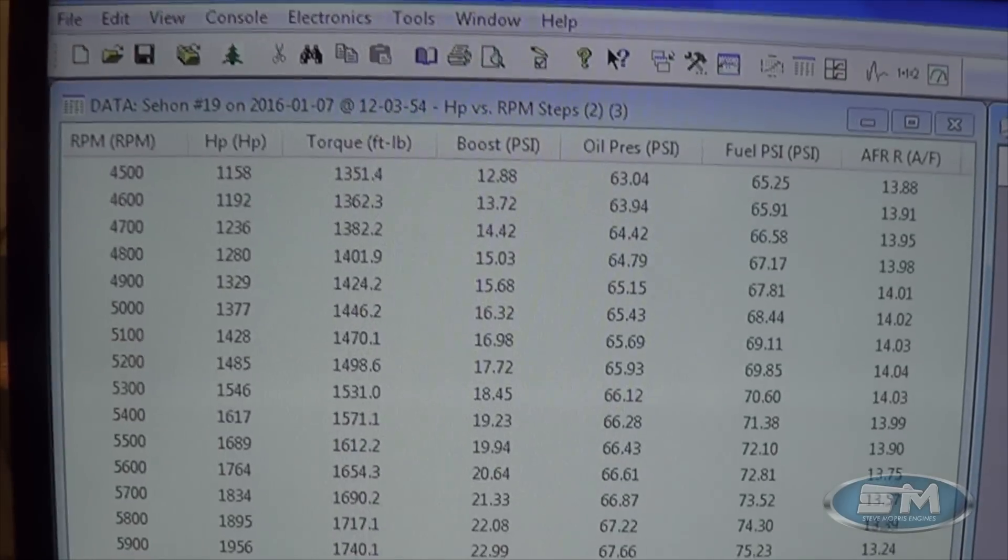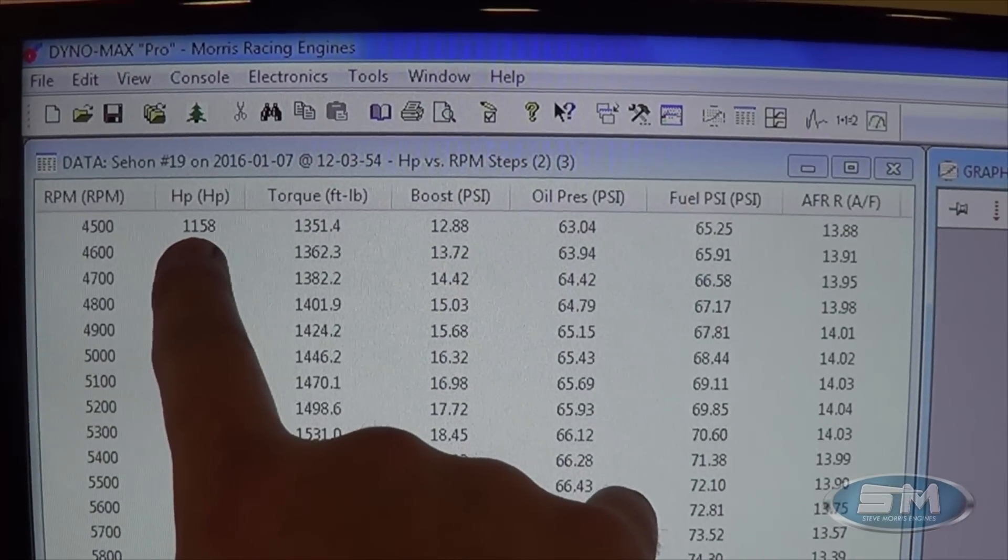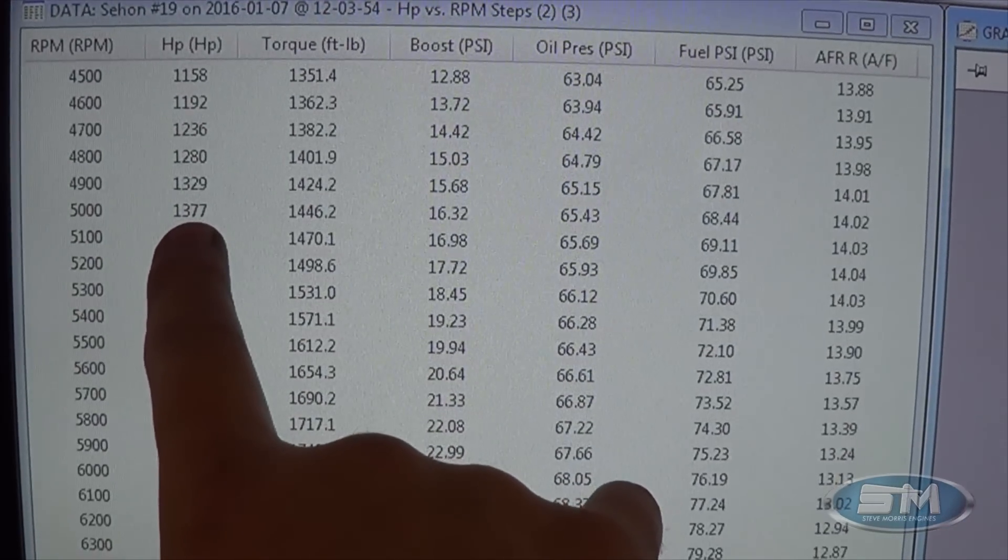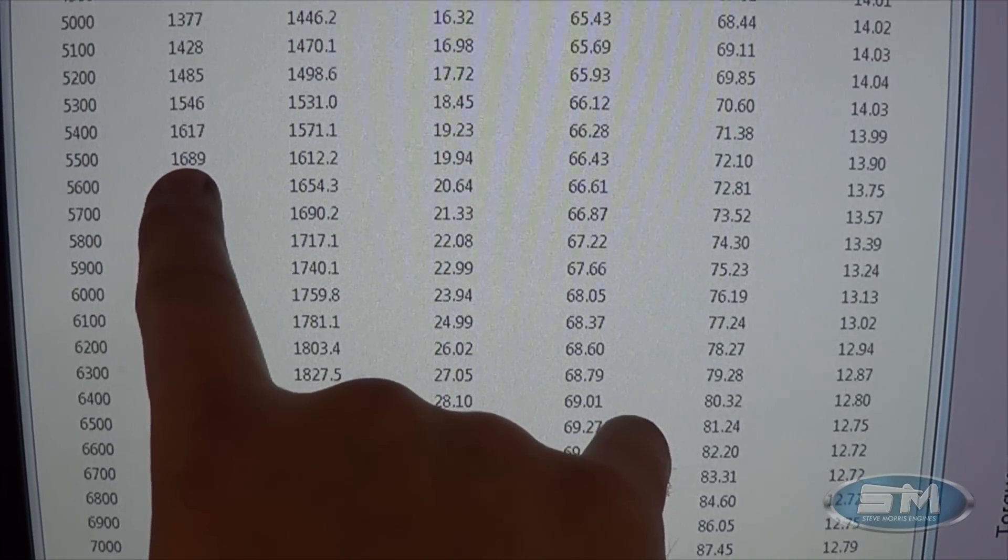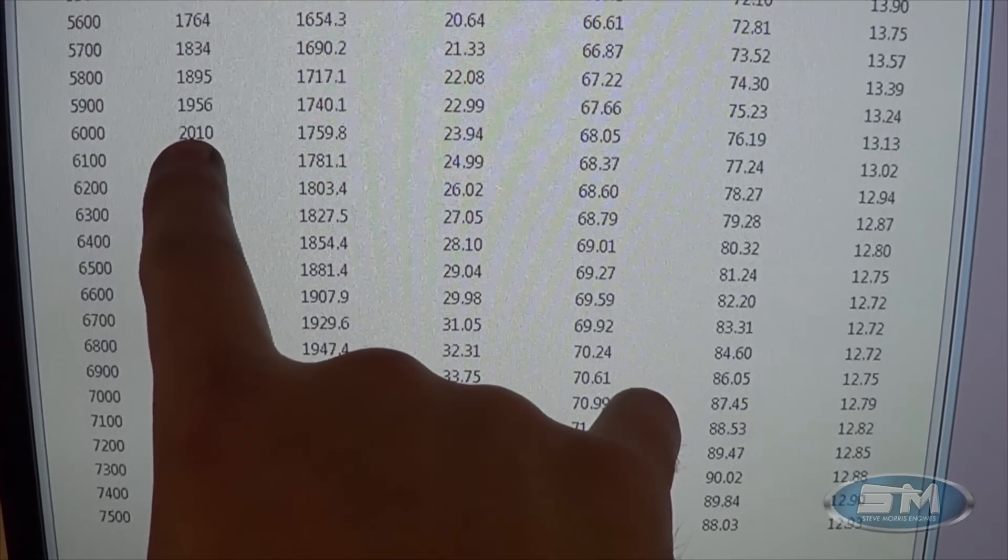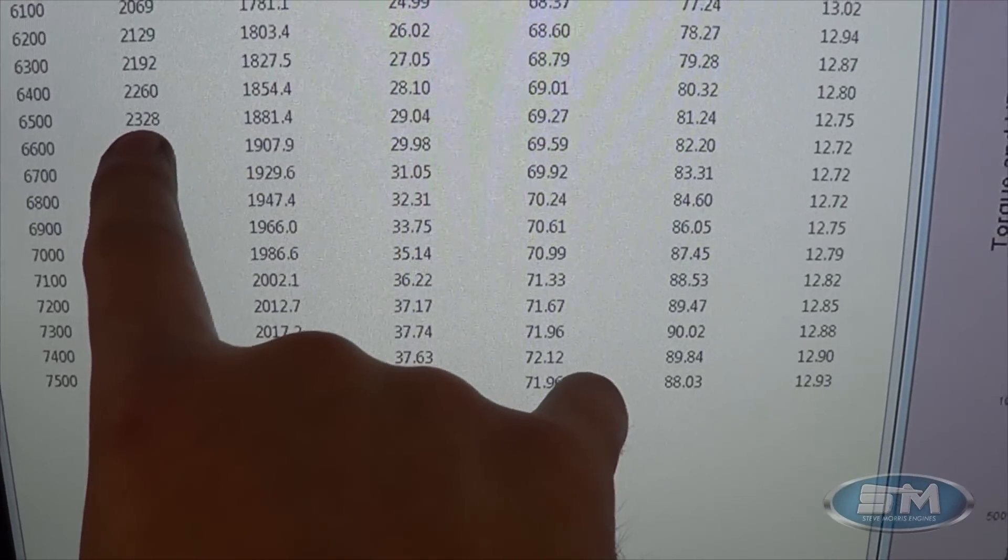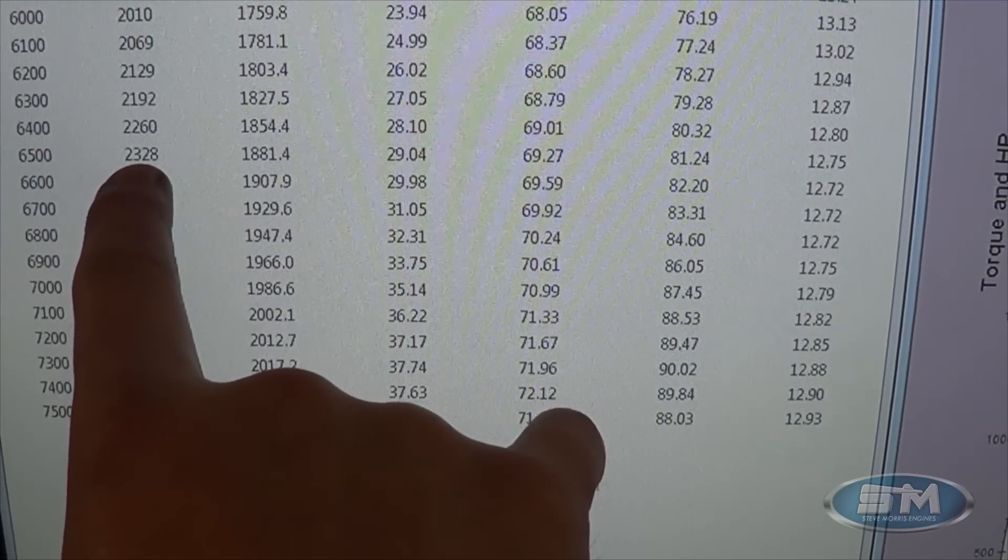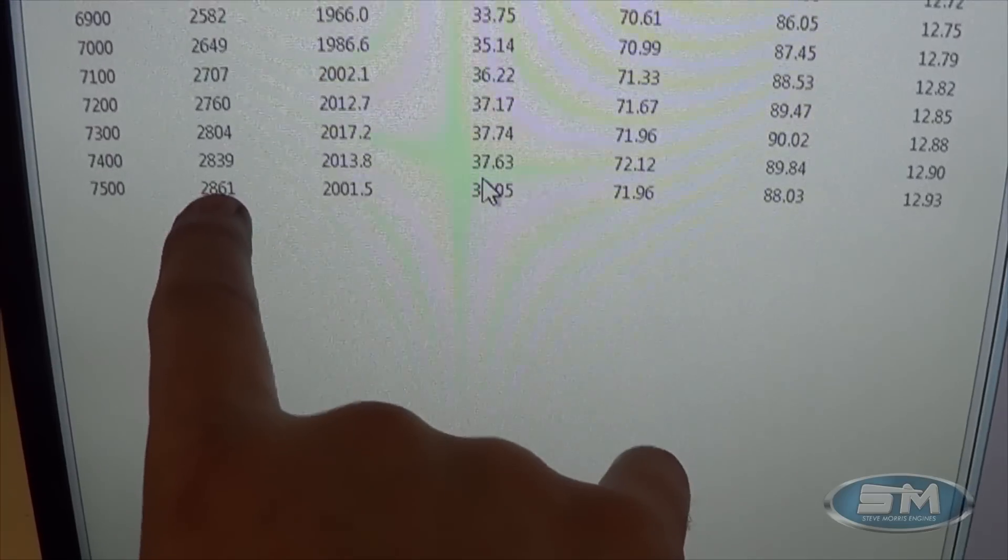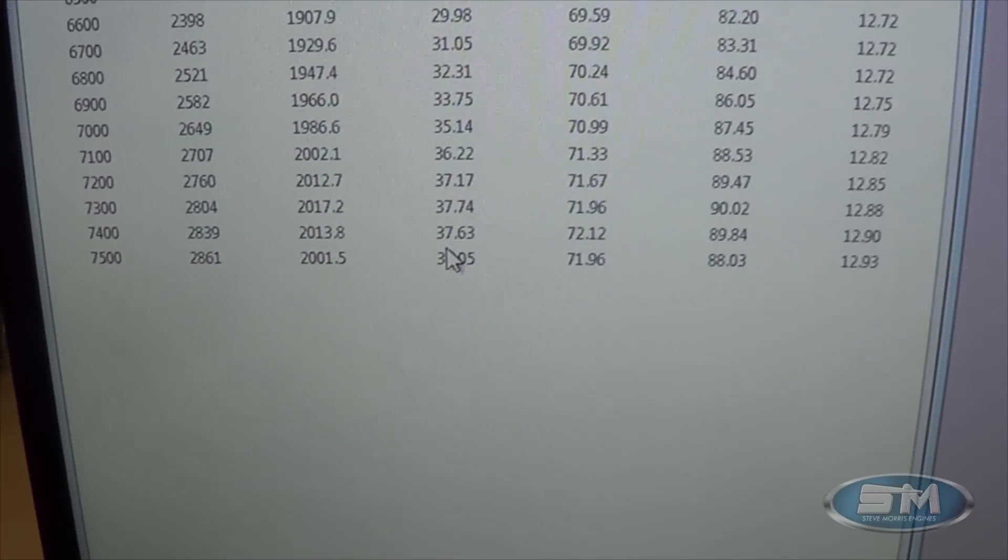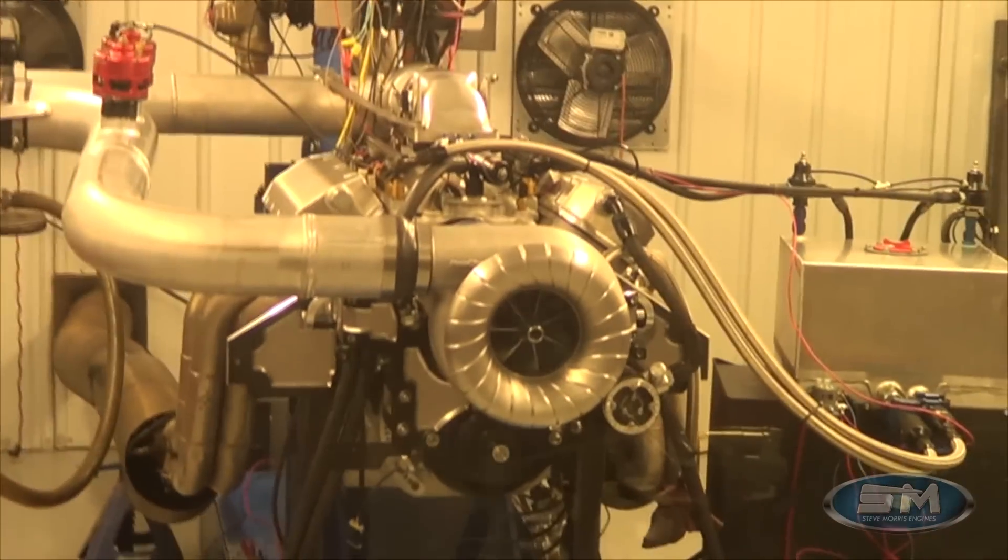We can take a look at some other numbers here. 4,500 was 1,158. 5,000 was 1,377. 5,500 was 1,689. 6,000 was 2,010. 6,500 was 2,328. 7,000 was 2,649, and 7,500 was 2,861. Real nice looking piece, pretty happy with that. I know Ricky's ecstatic with it. Now what we'll look at is the Holley numbers here.